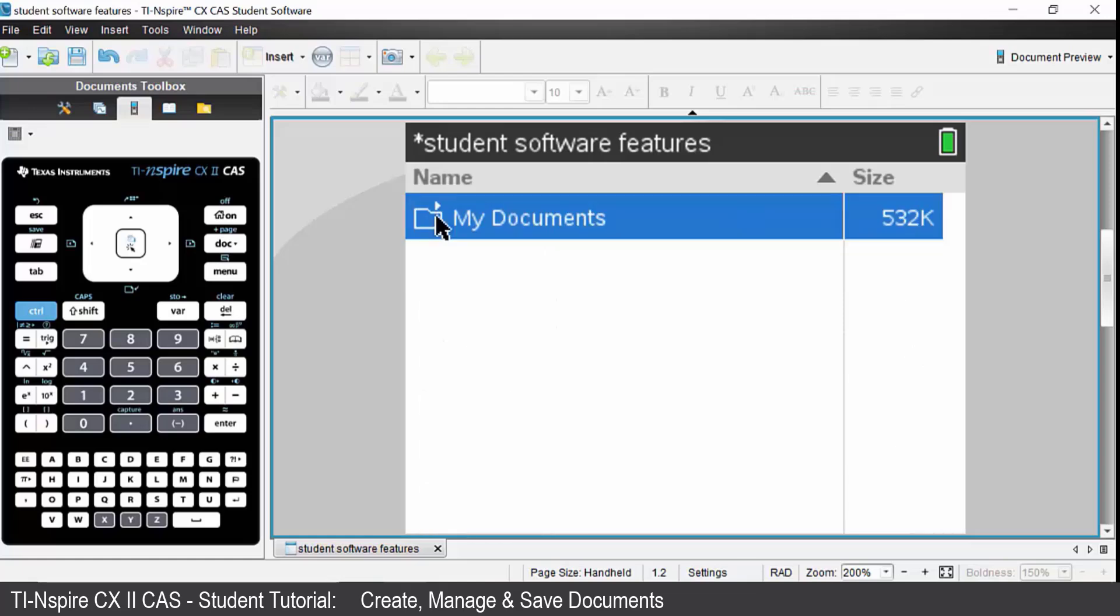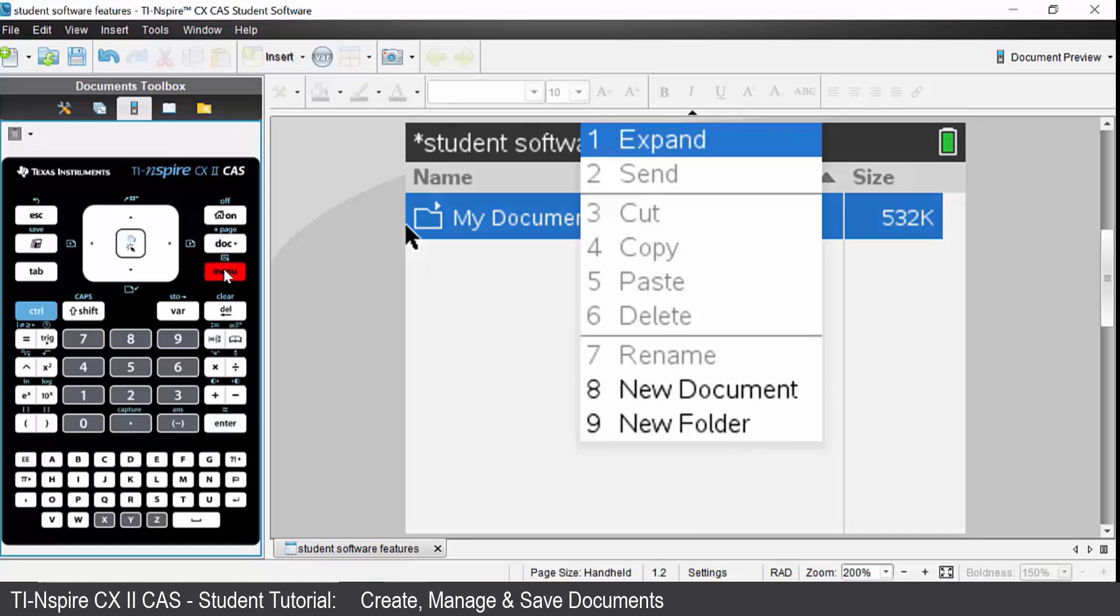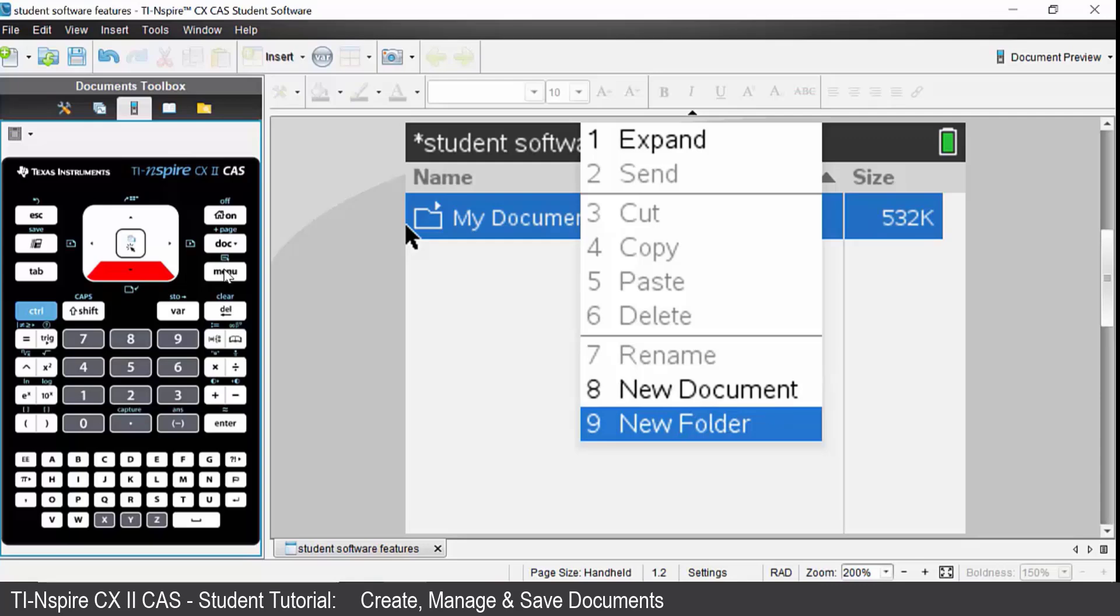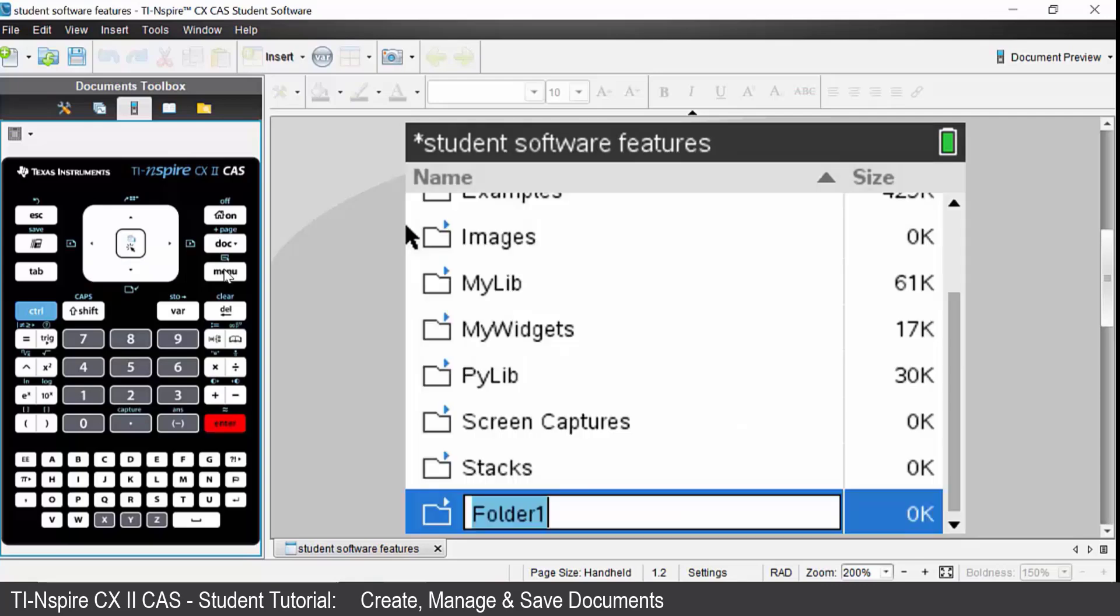If you want to create a new folder in there, press control followed by the menu key. Come down to option 9 which is new folder. You will then be prompted to name that folder. I'm just going to call it demo. Press enter when you are happy and you now have a new folder that has been saved onto your handheld.